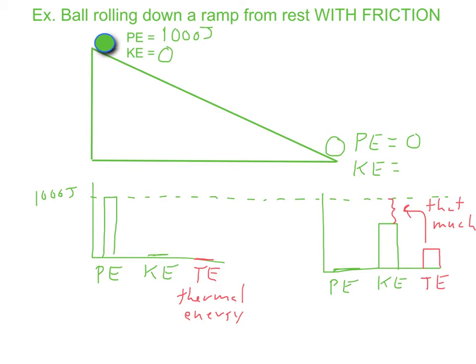So if you want to put some numbers with this, let's say kinetic energy at the bottom ends up being 700 joules. Then we know that the thermal energy ended up being 300 joules, again adding up to a thousand joules, just to show that the total amount of energy was conserved.